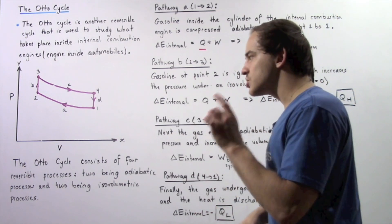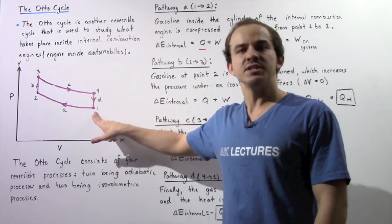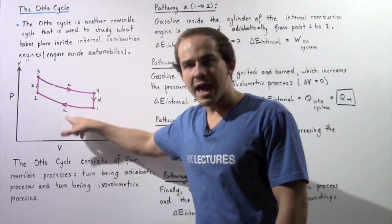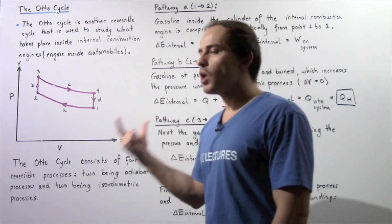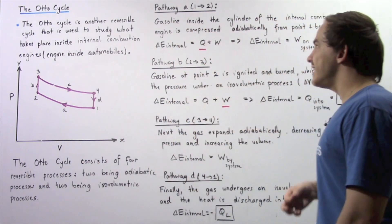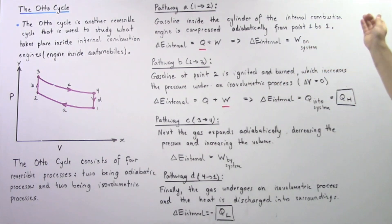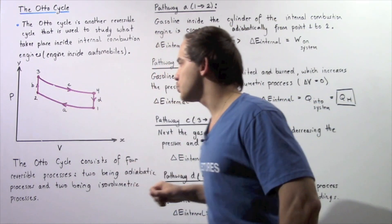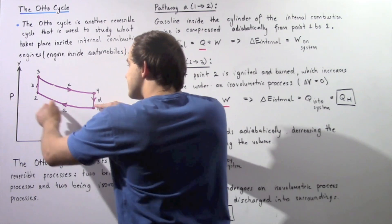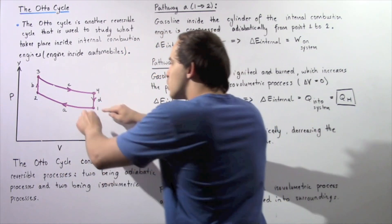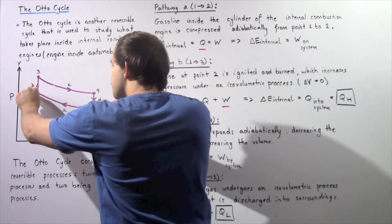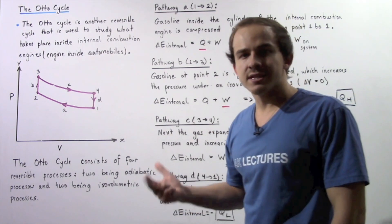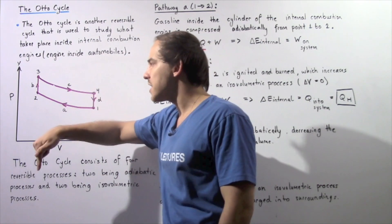Let's suppose our initial starting position is found at position one. When we go from position one to position two, that is pathway A. The gasoline inside the cylinder of the internal combustion engine is compressed adiabatically from position one to position two. This first process is an adiabatic process. Notice the volume decreases and the pressure increases. Because we're dealing with an adiabatic process, the heat that flows into or out of our system is zero.